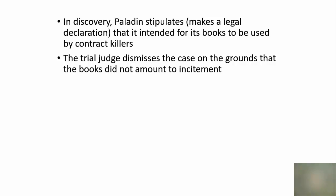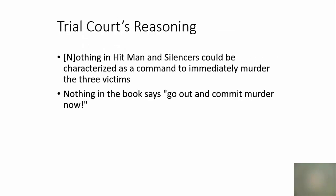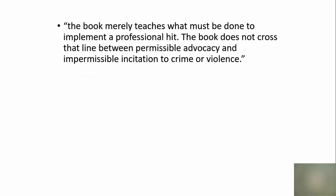The judge concluded that there was nothing in Hitman or Silencers that might be characterized as a command to immediately murder the three victims. He wrote in his opinion: 'Nothing says go out and commit murder now.' Instead, the judge said the book merely teaches what must be done to carry out a contract killing, and that it doesn't cross the line between permissible advocacy and impermissible incitation to crime or violence. So we have expression, we have intent, we have a specific crime — but the trial judge says what's missing is the actual words that cause someone to go out and do the bad thing.